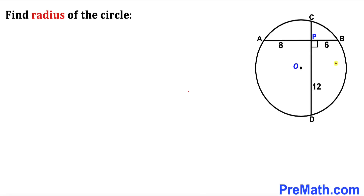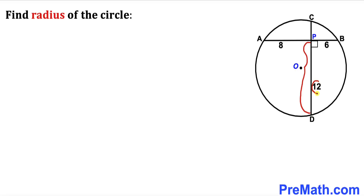Welcome to pre-math. In this video we have these two intersecting chords AB and CD, fully inscribed in a circle, such that they intersect each other at point P and are perpendicular to each other. Line segment AP is 8 units, PB is 6 units, and PD is 12 units. O is the center of this circle, and our task is to calculate the radius of this circle.